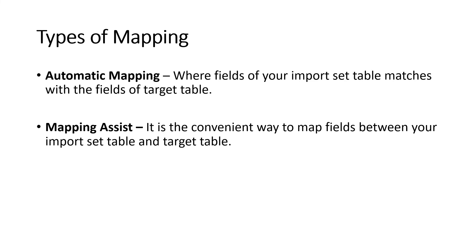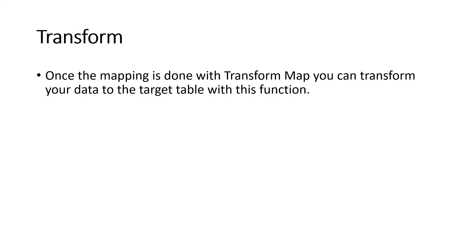If field names don't match, the most convenient way is mapping assist, where you manually map the fields between your import set table and the target table. Once mapping is done and you click Transform, the data moves to the target table. To summarize: load data into the staging table, use the transform map — either mapping assist or automatic mapping — to match the fields, then click Transform to move records from the source table to the target table.